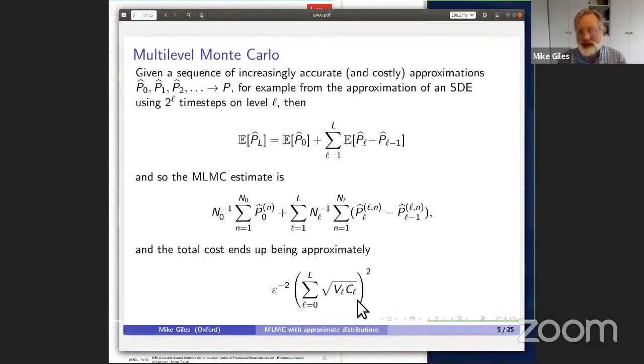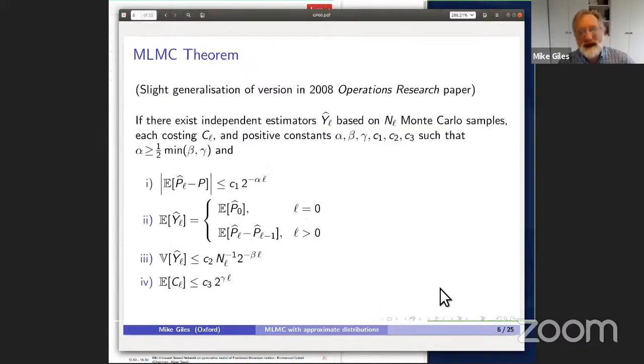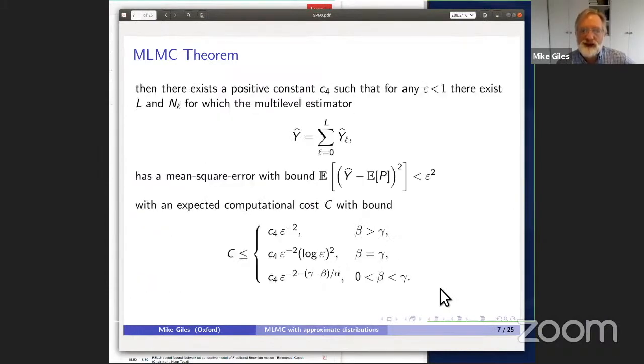Multi-level naturally extends that to a whole sequence of levels, in this context usually using some sort of geometric sequence. In the case of an SDE, using two to the L time steps on level L is the common thing to do. We get our usual multi-level estimate, and the total cost ends up with an expression of that form. That leads to the usual multi-level theorem, which I can skip through because there's nothing new there.